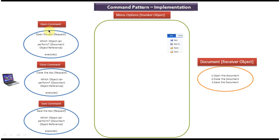Here you can see various command objects. The first one is open command — it has the request to open the document, the receiver object is the document object, and the execute method calls the document object open method. The close command has the request to close the document, the document object as receiver, and an execute method that calls document object close method. The save command has the request to save the document, the document object as receiver, and an execute method that calls document object save method.